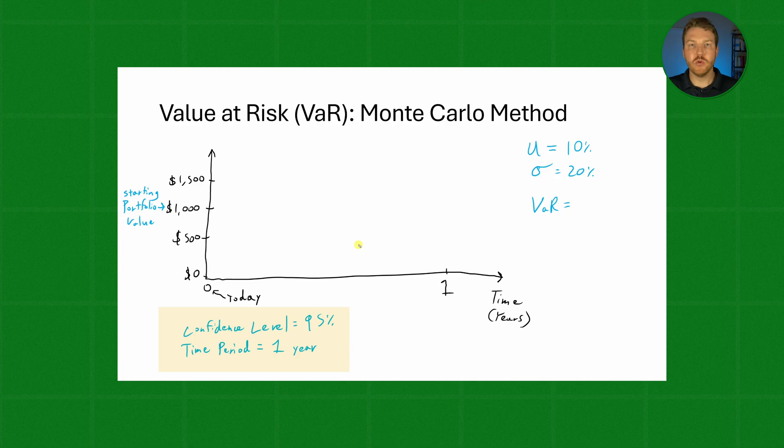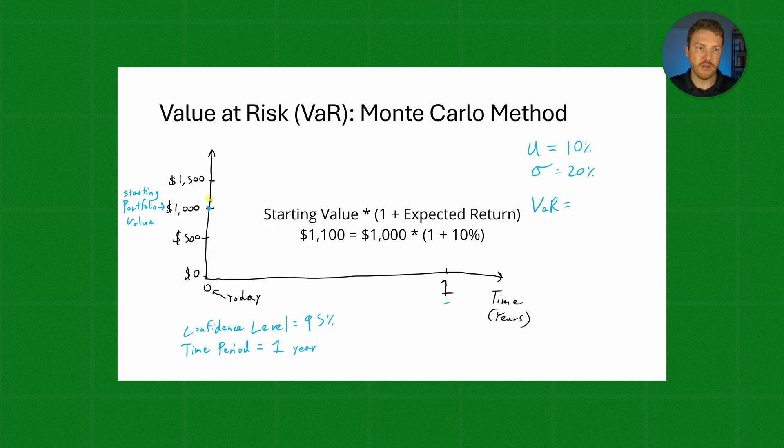So we will just run thousands of different simulations based on these metrics to see what is our VaR going to be at this confidence level. So every single time our simulation is going to start at $1,000. Now our mean expectation is that we would end at one year in the future, we would basically have like $1,100.